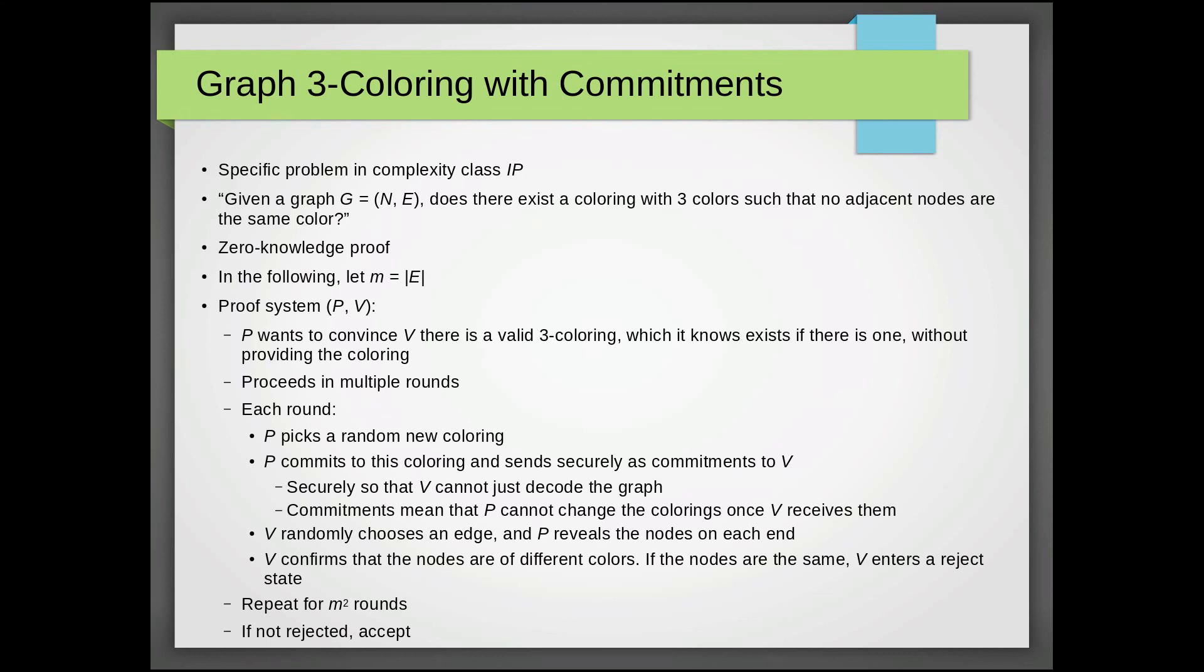So now we're going to go over a more specific example, which is also in the class IP: graph three coloring with commitments. So the actual problem here is we're given a graph consisting of a node set and an edge set. And we want to ask, is there a three coloring such that no adjacent nodes are the same color?